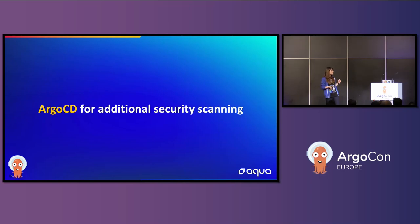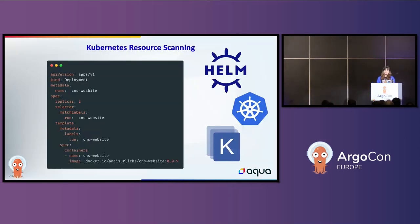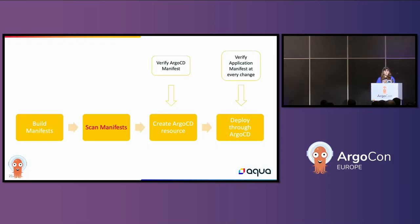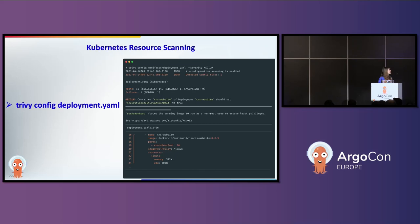Let's look a bit closer at ArgoCD for additional security scanning — how it can actually help us to introduce more security scanning, not just the mindset around GitOps. As we build our YAML manifests — here's a basic Kubernetes deployment YAML manifest — we can go ahead and scan that for any security issues. Ideally, before you build your YAML manifest, you'll already want to get started with security scanning across your different resources. Here's an example of how you would scan it with Trivy — you can use the trivy config command and then scan the deployment YAML manifest for security issues.